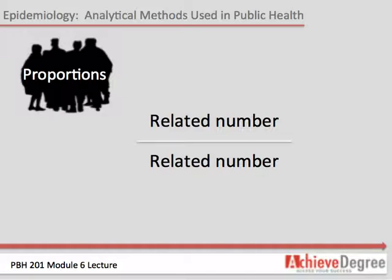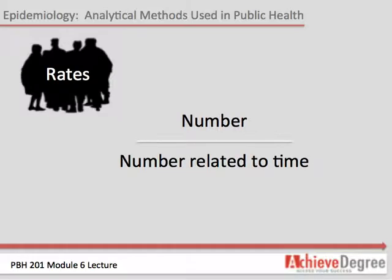The proportion of Sage College students who have ever taken a public health course is the number of students that have ever taken a public health course divided by the total number of students enrolled at Sage College. Though I don't have the exact numbers on hand, the proportion could be 60 students to 600 students, which equals 10%. Rates also involve dividing two numbers, but the denominator always relates to time. A rate we're all familiar with is driving speed, say 55 miles per hour. In another example, the incidence rate of Lyme disease in Albany County, New York was 115 per 100,000 in the population between 2010 and 2012.